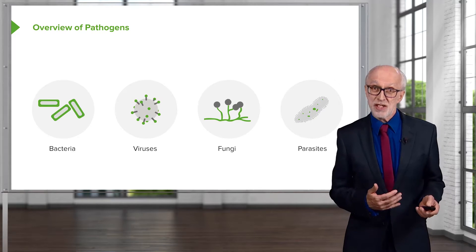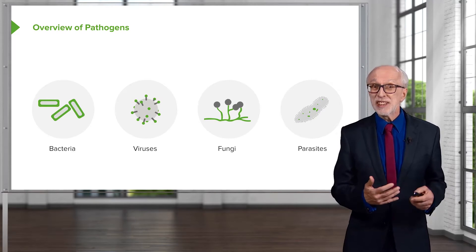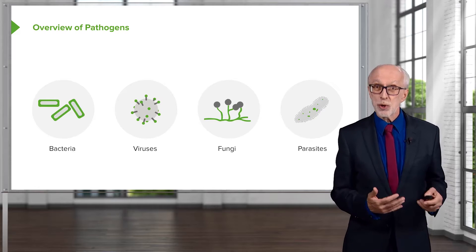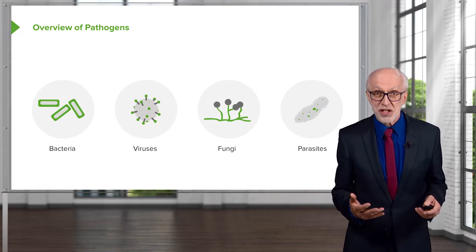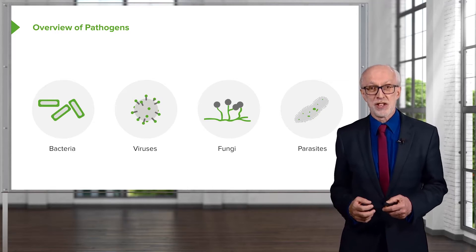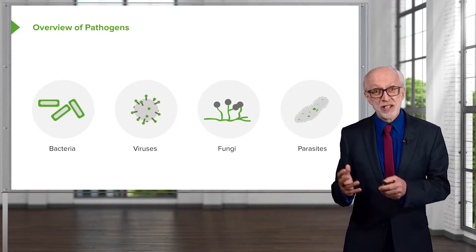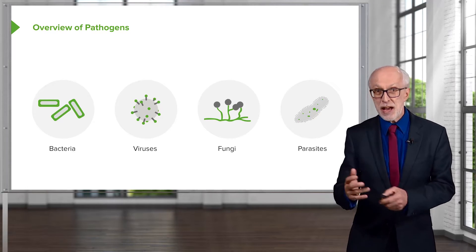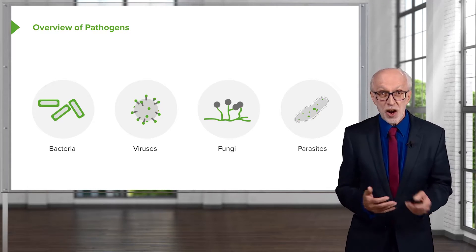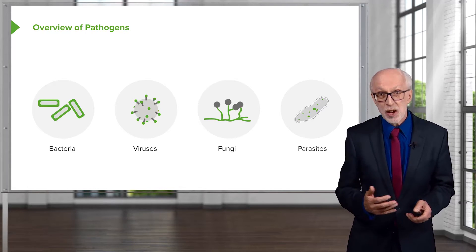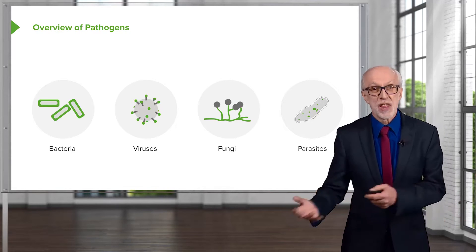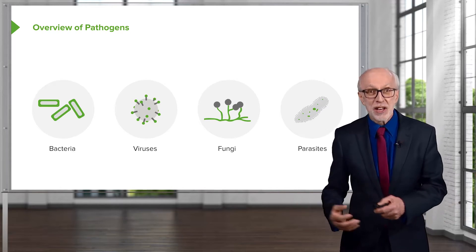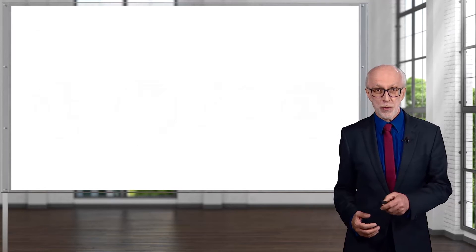So it's not surprising that the immune system doesn't employ just one strategy, but has multiple strategies to deal with different types of pathogens, depending on where they are in the body, whether they're inside a cell, whether they're outside of a cell, whether they're very small, very big, and so forth.